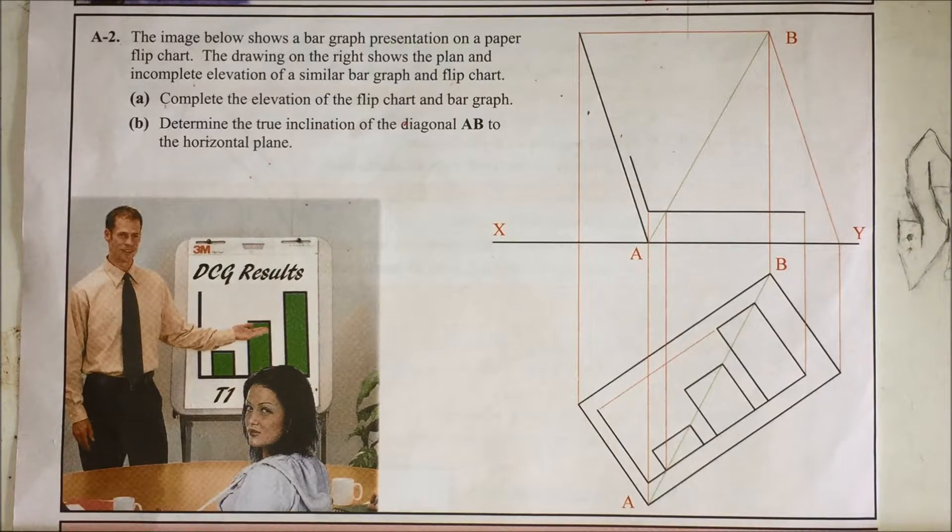The drawing on the right shows a plan and incomplete elevation of a similar bar graph and flip chart. Part A: complete the elevation of the flip chart bar graph, and determine the inclination of the diagonal AB to the horizontal plane.